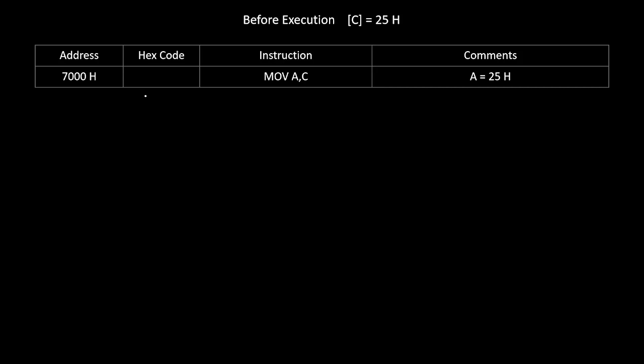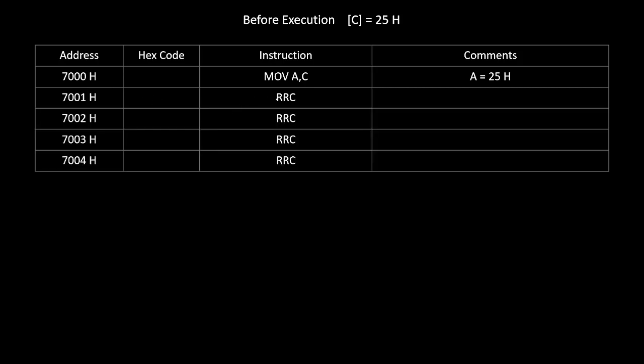Before execution, the content of the C register is 25H. We start our program from address 7000H. The first instruction is MOV A, C — this copies the content of C into the A register, so A becomes 25H. This is a 1-byte instruction. Then we write RRC four times. After the 4th RRC, the accumulator becomes 52H — nibble swapping is complete, 25H has become 52H.